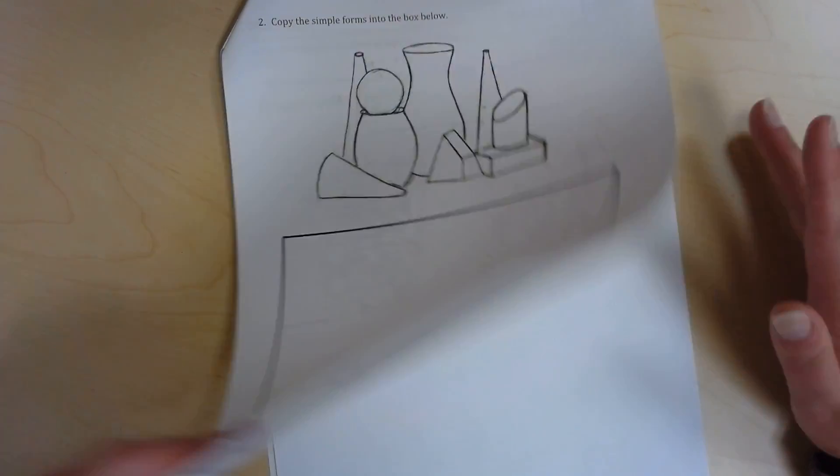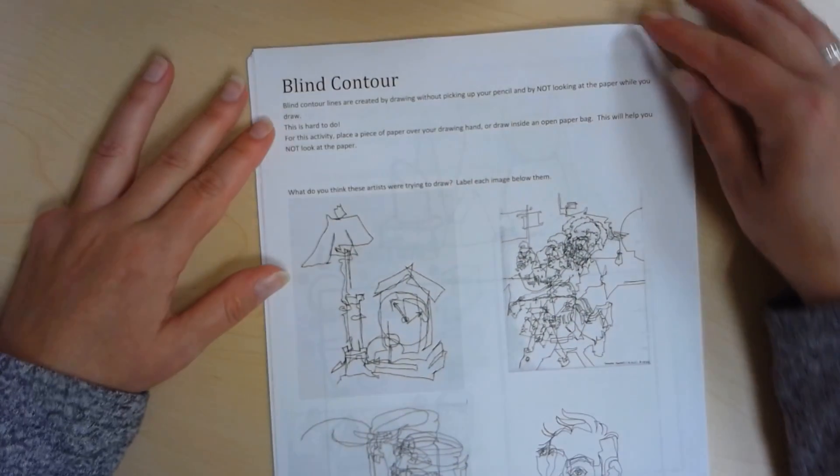When you are done with that, you are going to move on to the next type of drawing line drawings called blind contour.